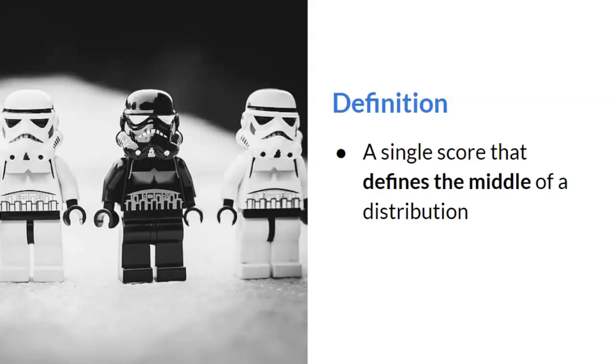Recall that distribution is just a fancy way of describing how a set of numbers or a data set look like, and a distribution is usually organized into a table or graph. This single score is considered the most representative value in the set of numbers.